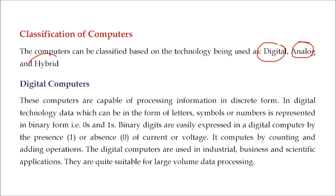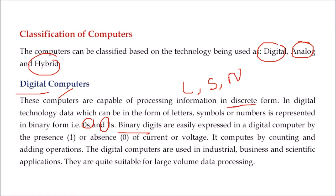Digital computers are capable of processing information in its discrete form. All letters, symbols, and numbers are understood in the form of zeros and ones — binary digits. These binary digits are expressed as presence — say 1 — or absence — say 0. For example, zero volts can be taken as 0 and plus five volts can be taken as 1, because a computer is an electronic device that works on voltages. It computes by counting and adding operations. Digital computers are used in industrial, business, and scientific applications. If you have large volume data processing, they are very suitable.